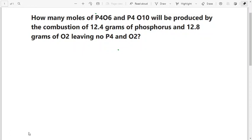Hello students, now let's discuss a very good question. The question is: how many moles of P4O6 and P4O10 will be produced by the combustion of 12.4 grams of phosphorus and 12.8 grams of oxygen?